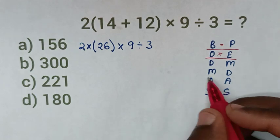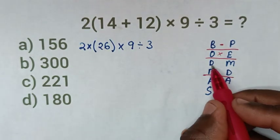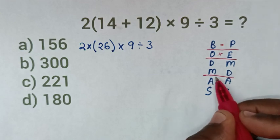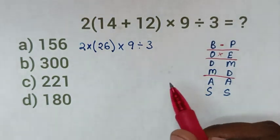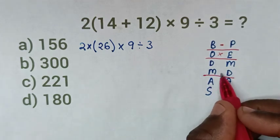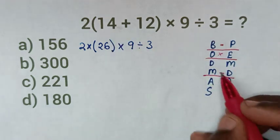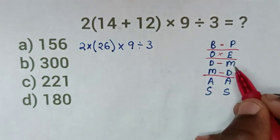In the next step, we have division and multiplication. If we have multiplication first, we start with multiplication, then division. If we have division first, we start with division, then multiplication.